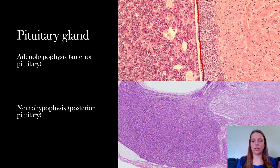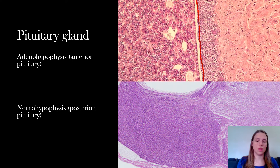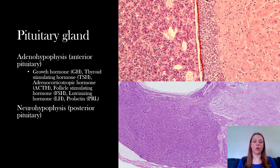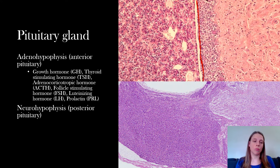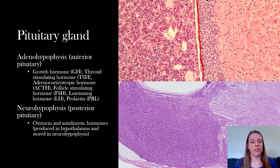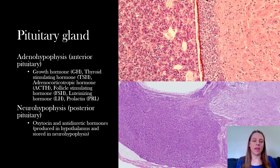Everything off to the left is adenohypophysis; to the right is neurohypophysis. The adenohypophysis produces growth hormone, thyroid stimulating hormone, adrenocorticotropic hormone (which stimulates the cortex of the adrenal gland to release hormones), follicle stimulating hormone, luteinizing hormone, and prolactin — the functions of which will get their own video. The neurohypophysis, the posterior pituitary, releases oxytocin and antidiuretic hormone, which are actually produced in the hypothalamus.